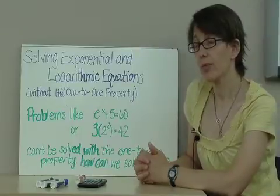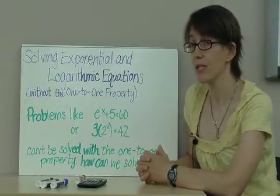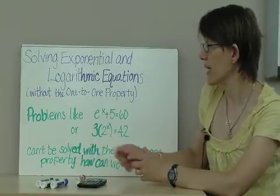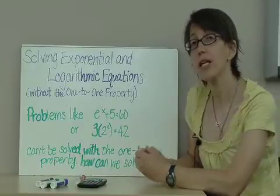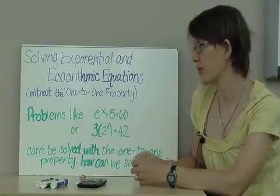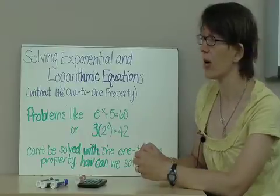we encounter many problems in mathematics like e to the x power plus 5 equals 60, or 3 times the quantity 2 to the x power equals 42, which cannot be solved using the one-to-one property. So we need to know how can we solve problems such as these.